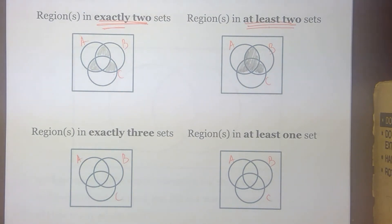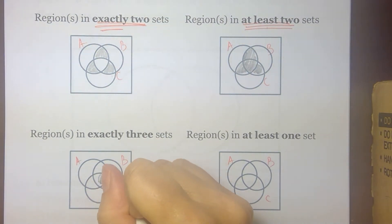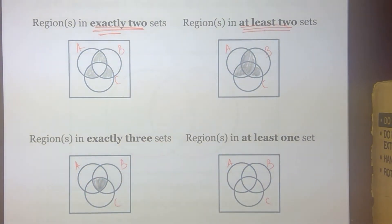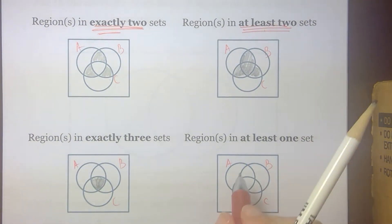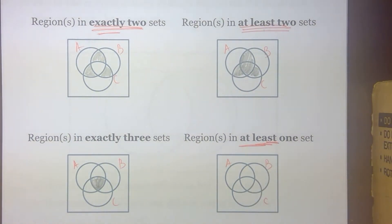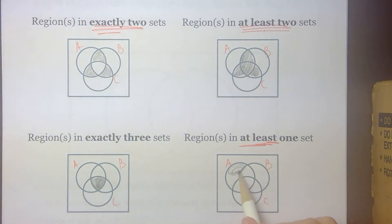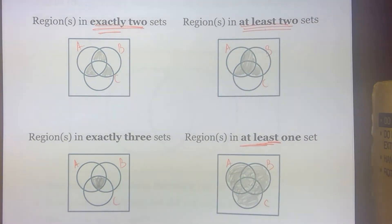Exactly three sets is the same thing as the intersection of all three. At least one means it's inside a loop. At least means it can be in more than one loop. But we're going to shade everything inside a loop. We are not going to shade that region eight for the universal set that's outside the loops. Again, this wording emphasis is going to be important as we move forward with our practice activities.